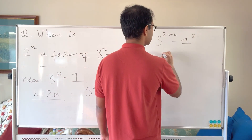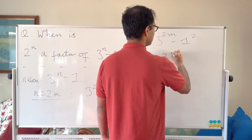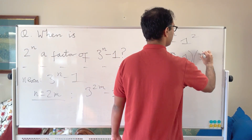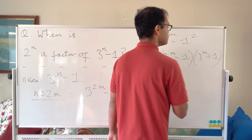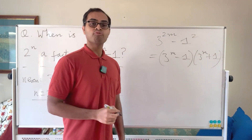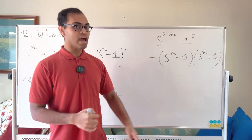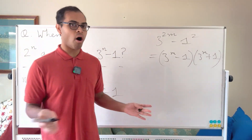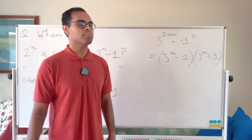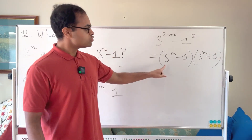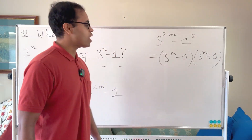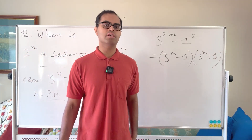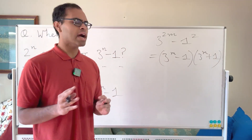Now 3^(2m) − 1 is a difference of squares. So 3^(2m) − 1 = (3^m − 1)(3^m + 1). We want to understand what the highest power of 2 dividing this product is.